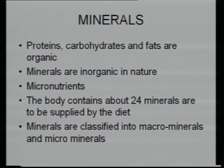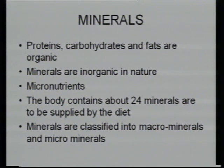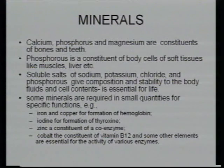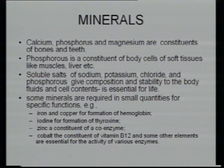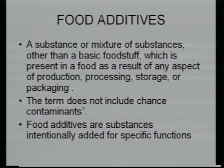Minerals are inorganic in nature — whereas proteins, carbohydrates, and fats are organic. Minerals are also known as micronutrients. The body contains 24 minerals and they are to be supplied by diet. They are classified as macro and microminerals. Phosphorus is required for blood cells. Sodium, potassium, and chloride are important for stability of body fluid. Iron and copper are required for haemoglobin. Iodine is required — as seen in advertisements, we should use iodized salt to prevent goitre.